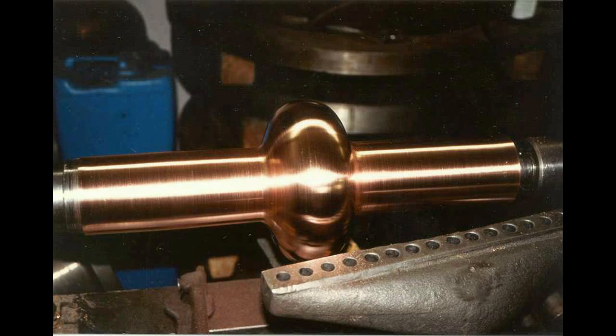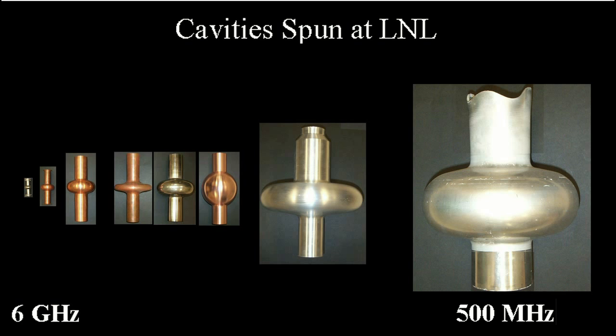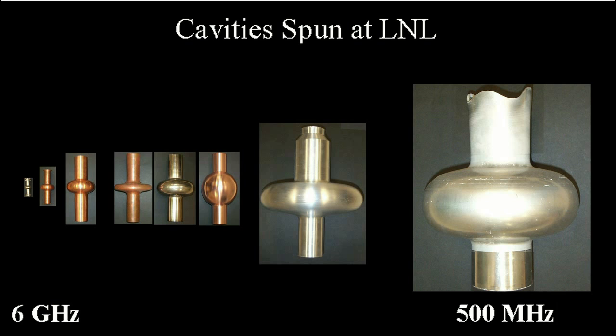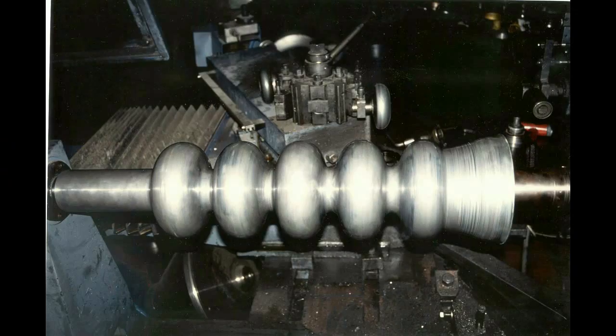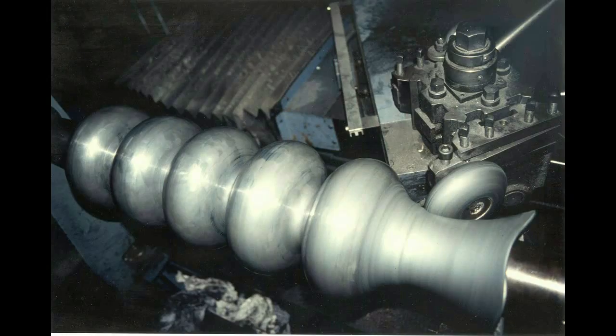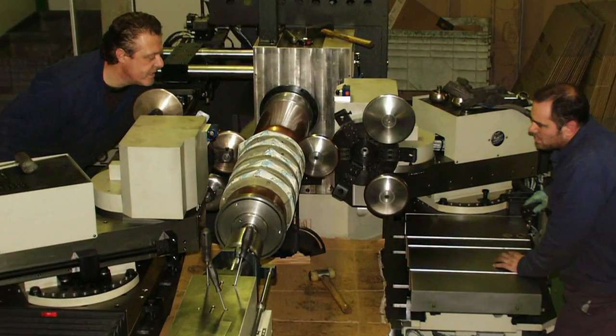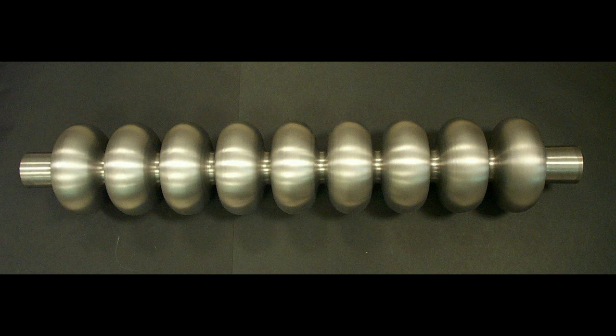The actual procedure for prototype spinning foresees a fabrication rate of the order of one resonator per day, but it can be increased to several times that rate when automatic machines will be used. 40 MW per meter has been reached in monocells and RF tests are in progress at the moment on 3-cell cavities.